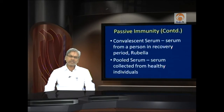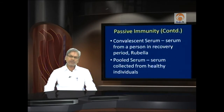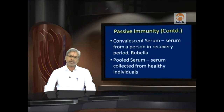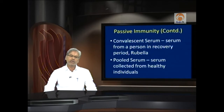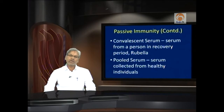Convalescent serum is collected from a person in the recovery period. When a person gets infected, is cured, and remains in the recovery period, if we collect serum at that time, we can get a number of active antibodies specific for that infection — for example, rubella antibody from convalescent serum. At times we collect pooled serum, collected from healthy individuals, which is employed for common infections faced in daily routine.